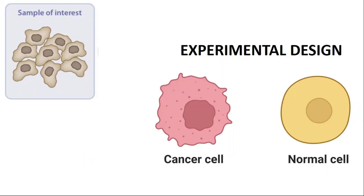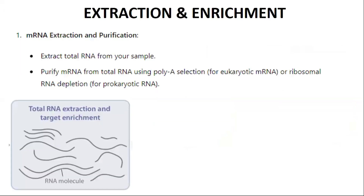The sample of interest depends on what type of messenger RNA you want to explore. For example, if you are working on cancer cells and want to look at gene expression in cancer cells versus normal cells, you will extract the messenger RNA of the cancer cell. You can also look at expression in normal cells of the heart, liver, spleen, pancreas, or neurons. It depends on your sample of interest.